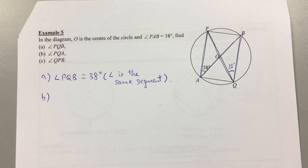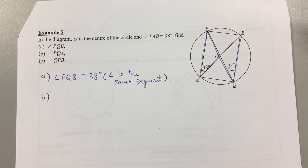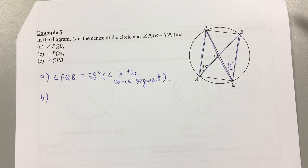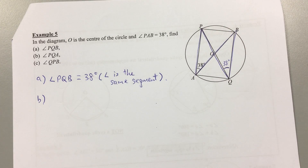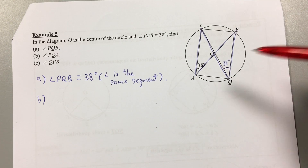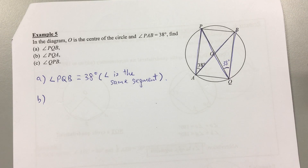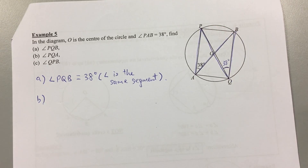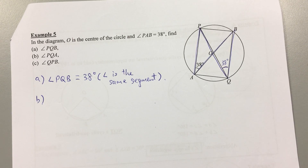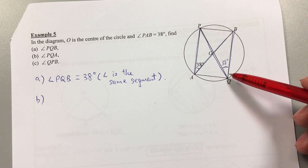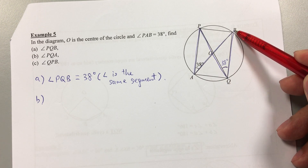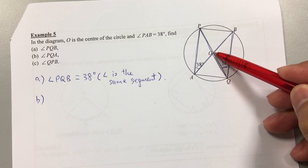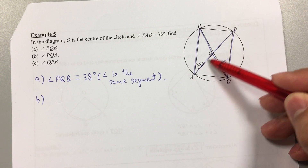For part B, we need angle PQA. Notice that AOB is a straight line passing through the center, so it is a diameter. Therefore angle AQB equals 90 degrees by the angle in semicircle property. Writing down all information helps you check later and shows the examiner your thinking.